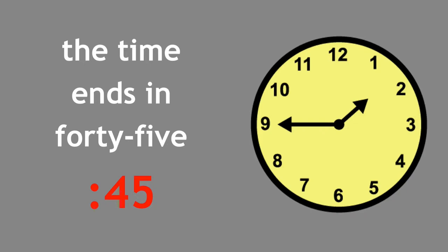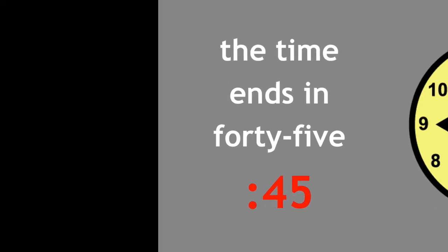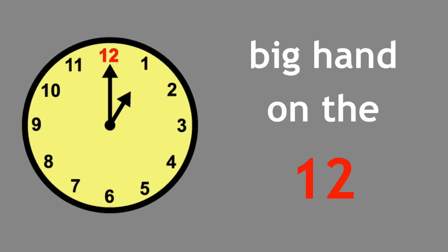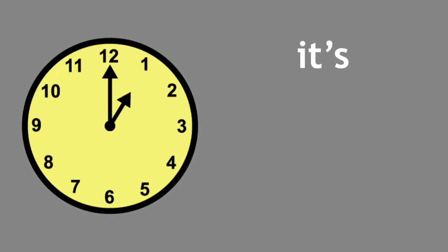First, we identify the small hand, then the big hand, and then we identify the time. Small hand on the one, big hand on the twelve, it's one o'clock.